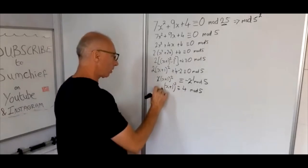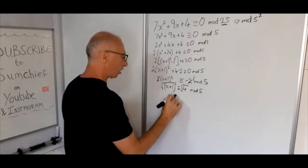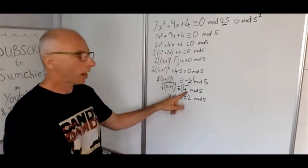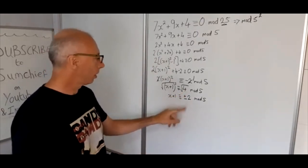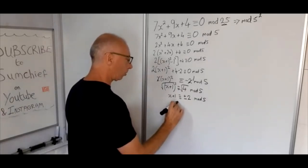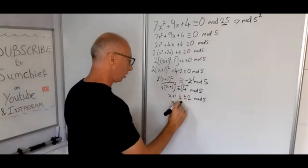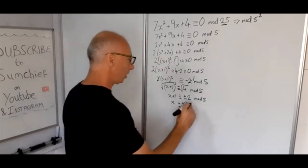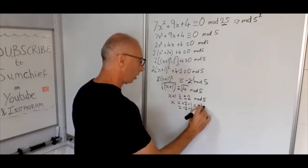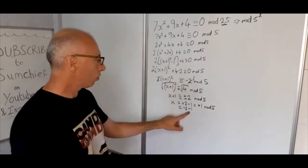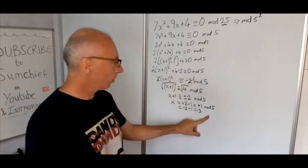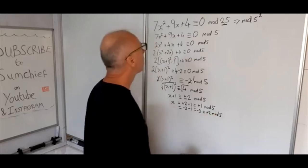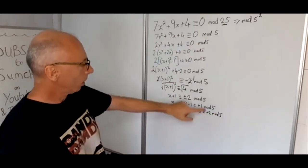So now we've got x plus 1 is congruent with plus or minus 2 mod 5. Two solutions to the square root of 4. So now all we need to do is subtract 1 on both sides. So now x will equal plus 2 minus 1 or minus 2 minus 1. So plus 2 minus 1 that's going to give us positive 1 mod 5. And minus 2 minus 1 is going to give us minus 3 which is then going to give us plus 2 mod 5. So after all that the solutions for this one is going to be 1 and 2.